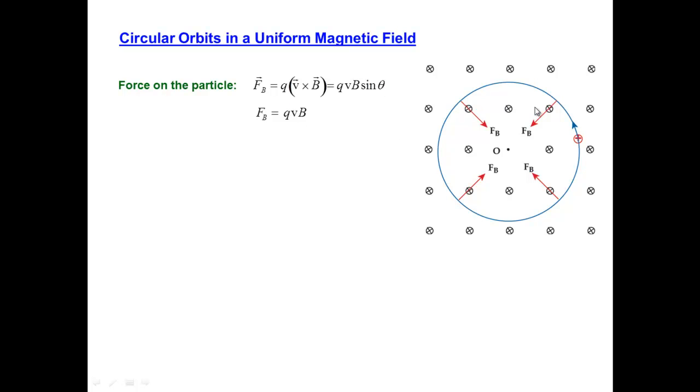The force being QVB sine theta in magnitude. We see here the special case where the velocity vector and the magnetic field vector are perpendicular to each other. The sine of 90 is 1. Thus, the magnitude of the force is just QVB. We also know, because we'll have M times A on the right-hand side of Newton's second law, we know that in this special case where there's circular motion, the acceleration has the expression V squared over R.